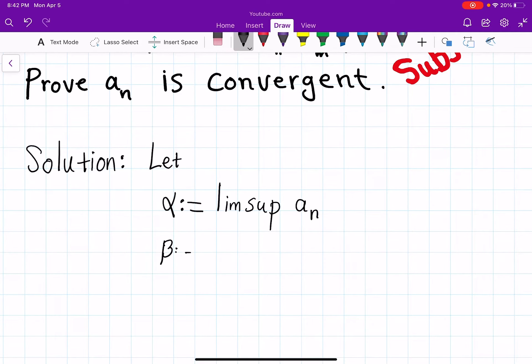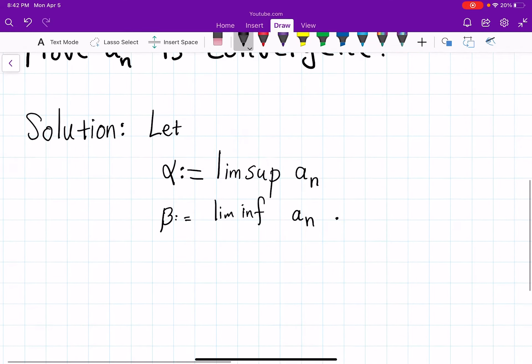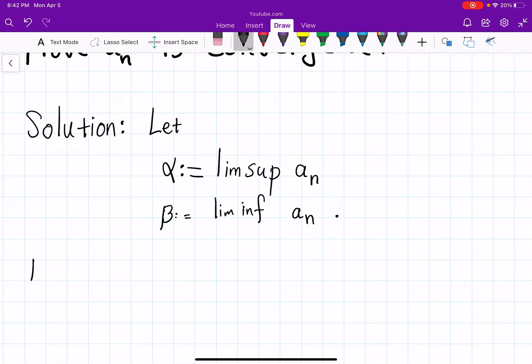β is liminf of aₙ. Because these limits always exist but they could sometimes be infinity but the boundedness of sequence implies that so by assumptions we know aₙ is bounded.